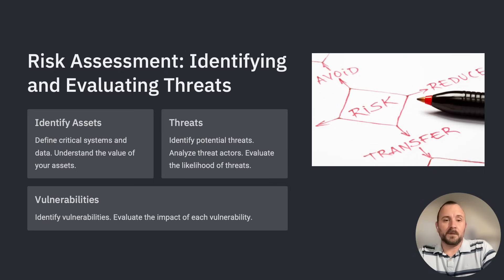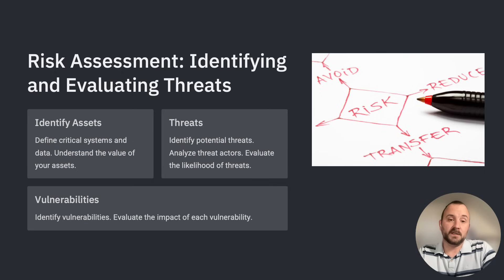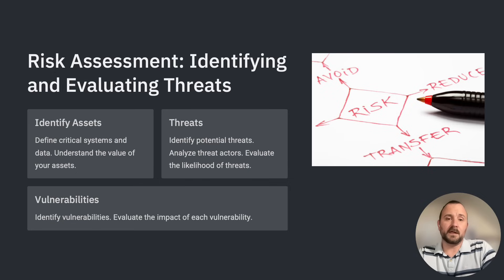The systematic risk assessment steps are: first, identify your assets; next, identify the threats and vulnerabilities; then assess the likelihood of each threat; assess the potential impact of each vulnerability; and finally, prioritize the risks to your organization based on likelihood and potential impact.